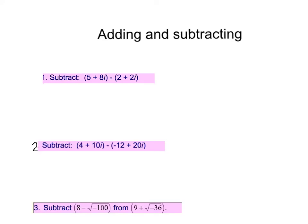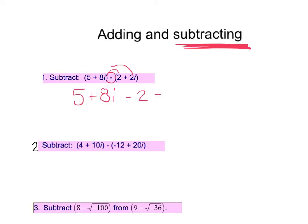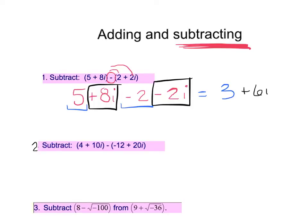Now we're going to do quite a few operations with imaginary units, starting with adding and subtracting. The biggest issue is subtracting — we have to be really careful with that negative. For example, the quantity 5 plus 8i minus the quantity 2 plus 2i: rewrite it, distributing that negative to get negative 2 minus 2i. Then combine like terms: 5 and negative 2 gives positive 3, and 8i minus 2i gives positive 6i. Our biggest mistake is not distributing that negative, so take the time to rewrite it.